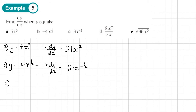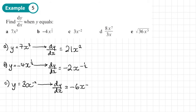Part c: y equals 3x to the power of negative 2. So dy dx — the 3 is already there, multiply by the power: 3 times negative 2 is negative 6x. Take 1 away from the power, giving dy dx equals negative 6x to the power negative 3. This can also be written as negative 2 over square root x for part b, and negative 6 over x cubed for this part.